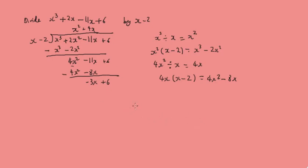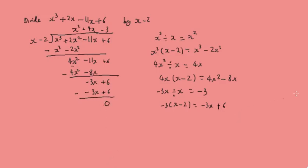Now we take minus 3x and divide it by x, giving us minus 3. So we put minus 3 in the quotient. Then minus 3 multiplied by x minus 2 gives minus 3x plus 6. We subtract that and it gives us 0. So x³ plus 2x² minus 11x plus 6 divided by x minus 2 gives us x² plus 4x minus 3.